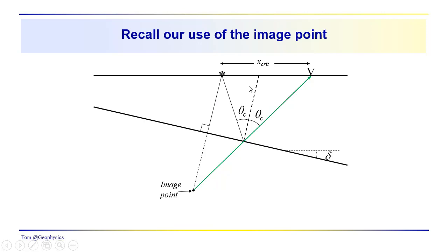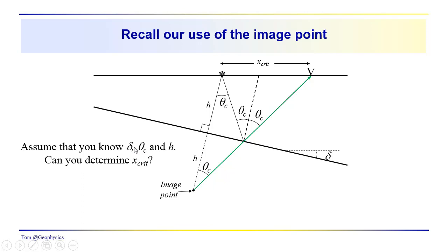Now we can see that we don't have a right triangle. This side is h, so the length of the far side is 2h. We know the length of that side, but we don't know the length of the travel path and we don't know x-critical. We do know that this angle is theta-critical. So, if we assume that we know the dip, theta-critical, and h, how are we going to determine x-crit, the critical distance?